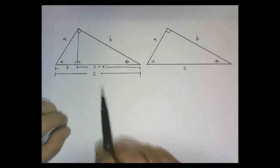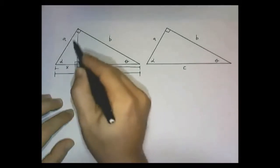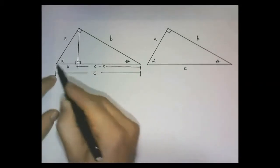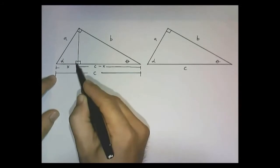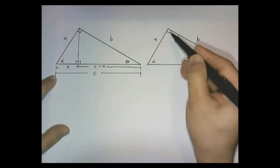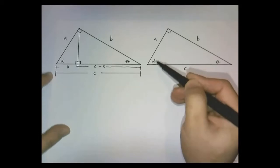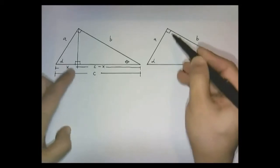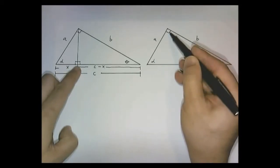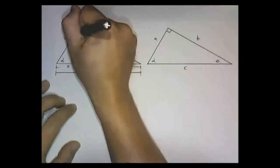The idea of similar triangles is that if two triangles share two identical angles, then their third angle has to be the same. For example, this smaller triangle right here has the angles alpha and the 90-degree angle. That means that since alpha and a 90-degree angle are shared between these two triangles, this angle here has to be theta. I'm going to inscribe that right here.